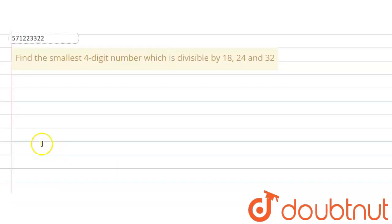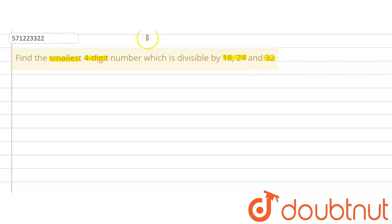The given question says: find the smallest four digit number which is divisible by 18, 24 and 32. So we are supposed to find out the smallest four digit number which is divisible by these three numbers.